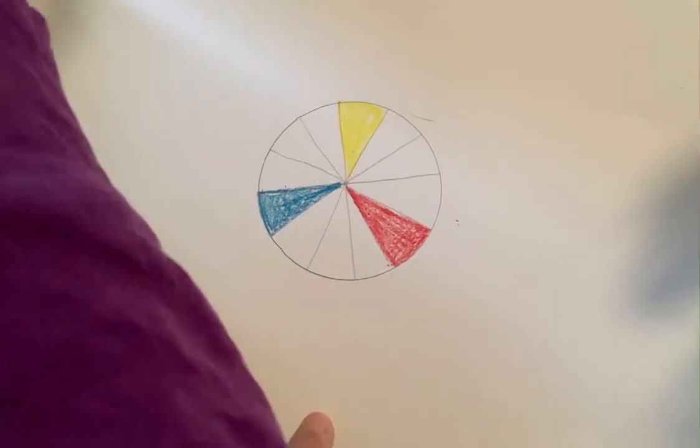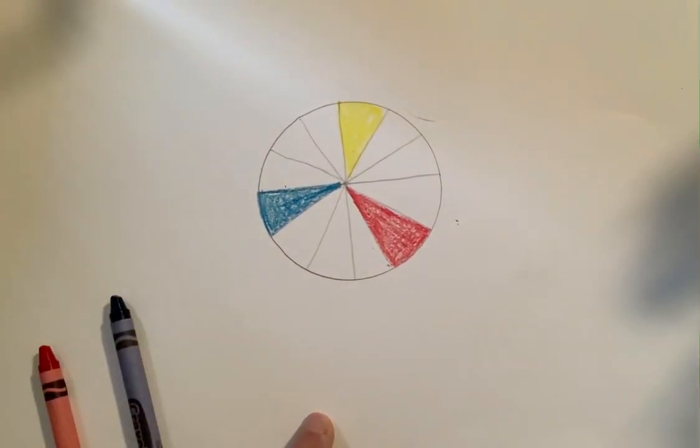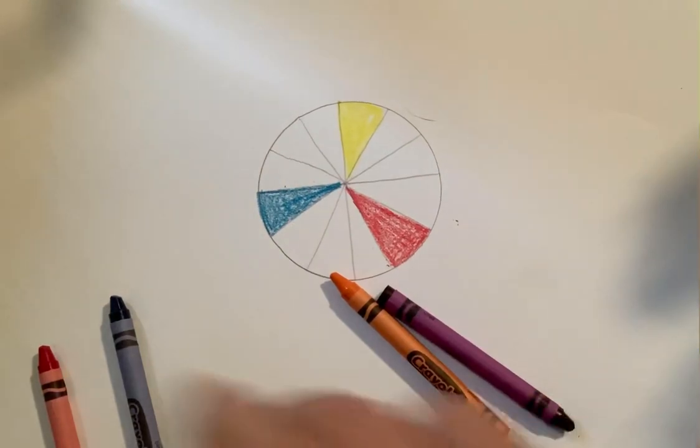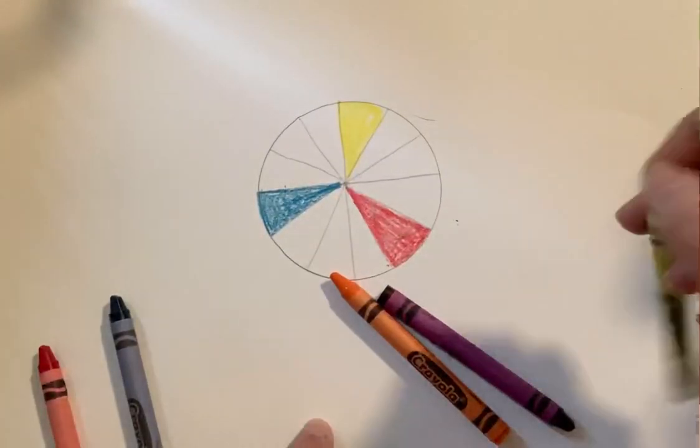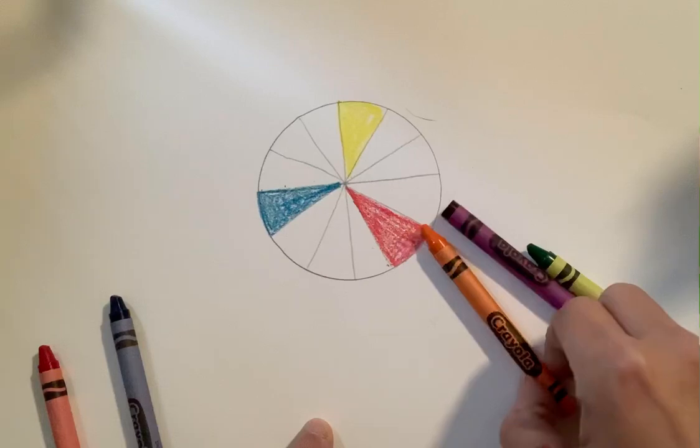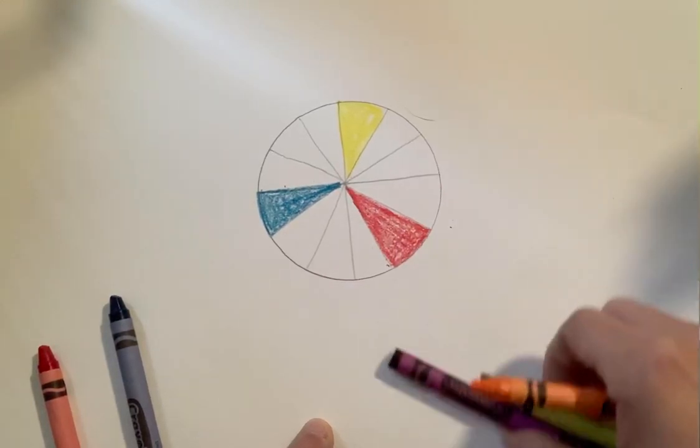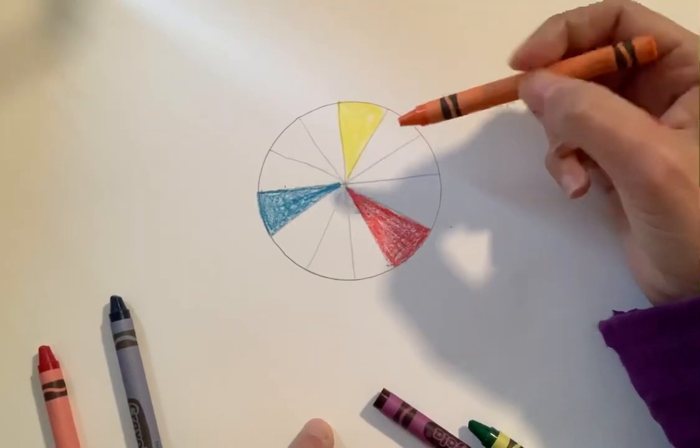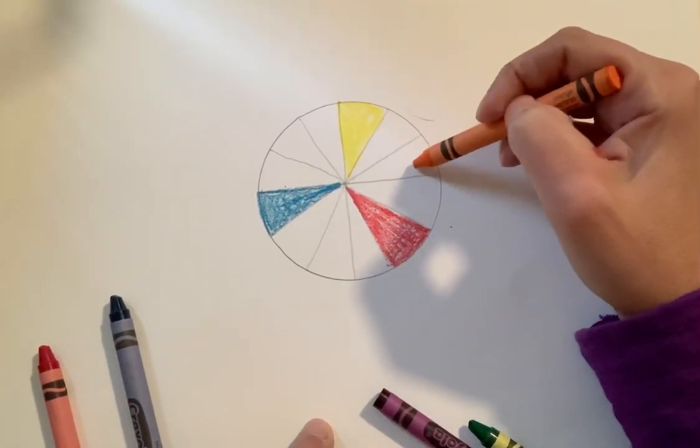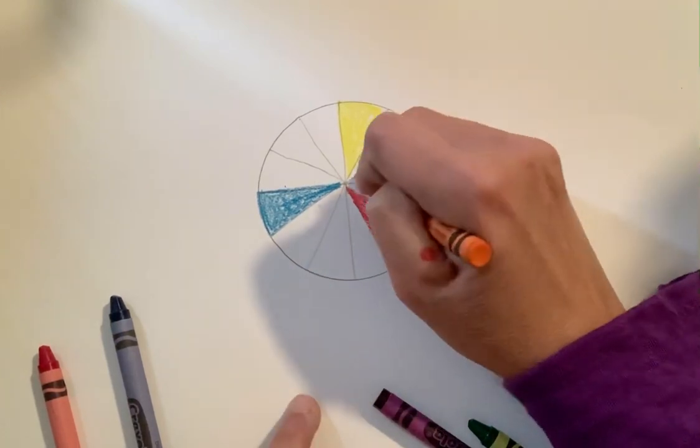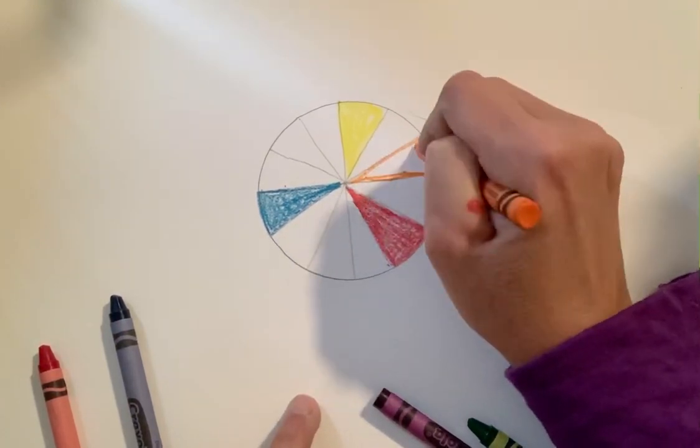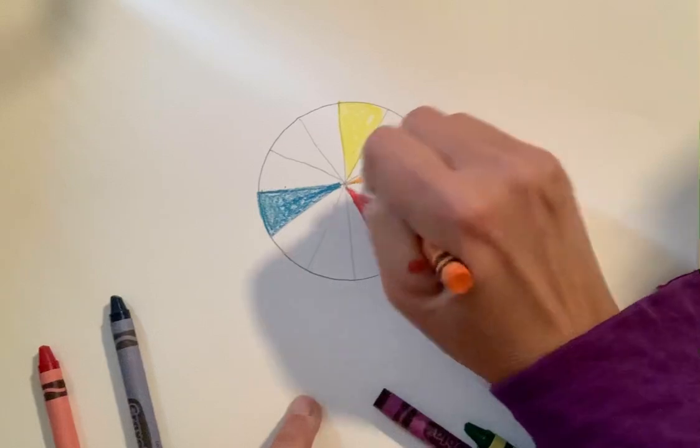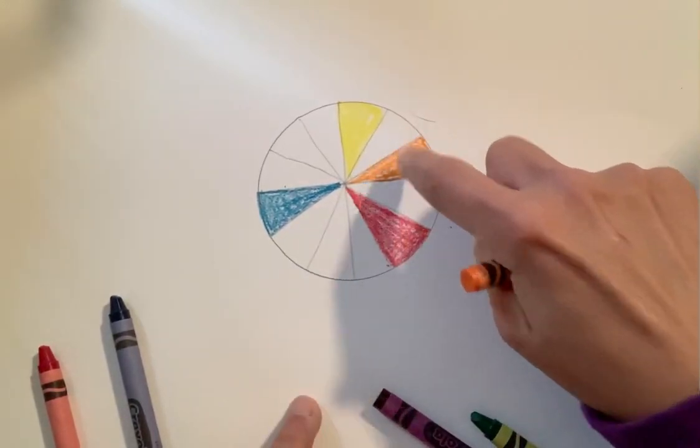Then you can go in and you're going to use your secondary colors: orange, purple, and green. Remember the colors need to go in between what makes them. So red and yellow make orange. I'm going to put those between and I'm going to leave a white space in between to be sure that I'm leaving room for my tertiary colors.